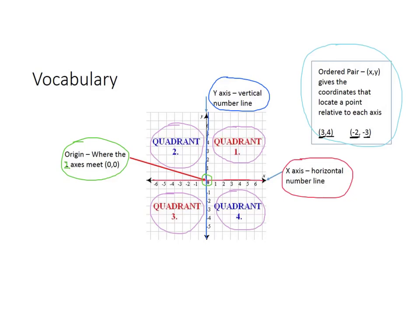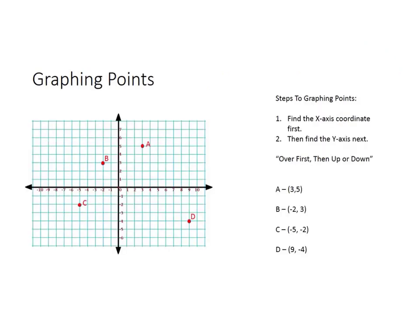Now that you know this basic information, we're going to put it into play. Graphing points. There are two main steps to graphing points. Number one, find the x-axis coordinate first. Remember, the x-axis is going left to right. After you do that, then you find the y-axis, which is the vertical line going up and down. One way of remembering this is to tell yourself, over first, then up or down.